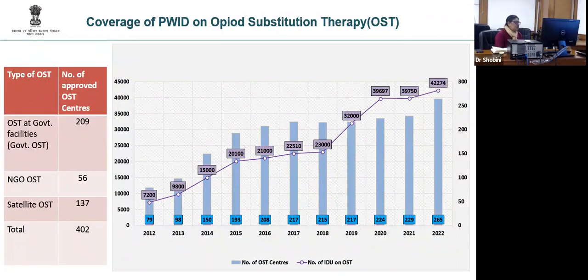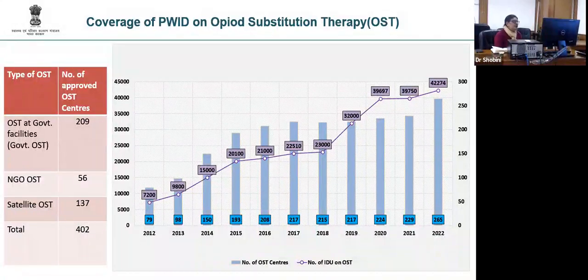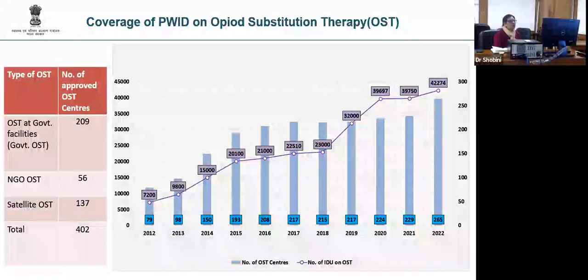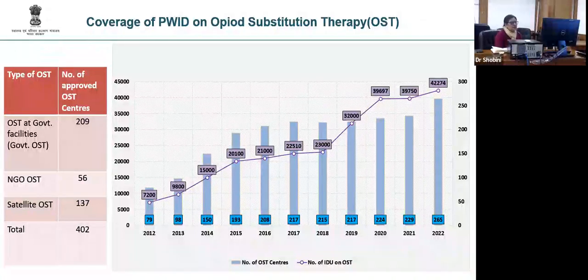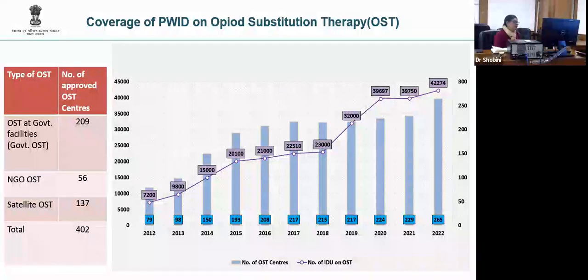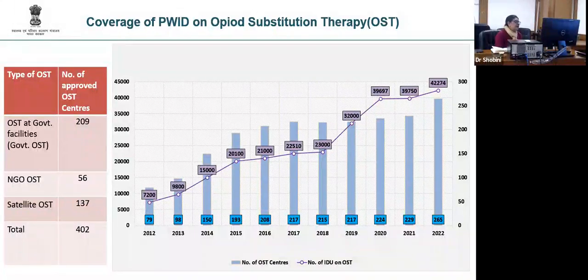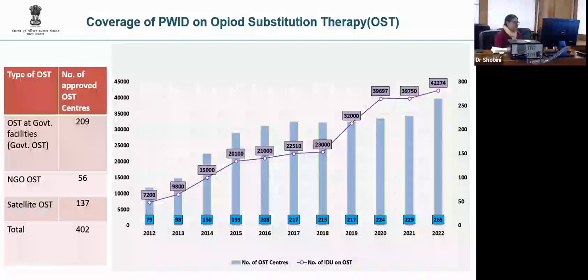Opioid substitution therapy has been scaled up over the years to reach 42,274 people who inject drugs through 265 opioid substitution therapy clinics, partly in government and some in NGO sites.